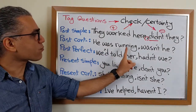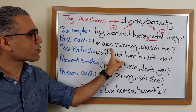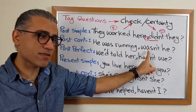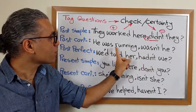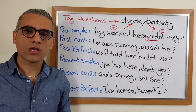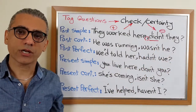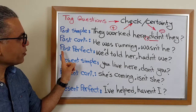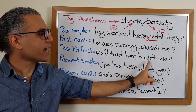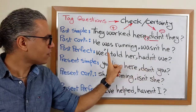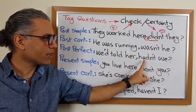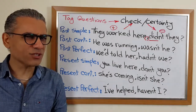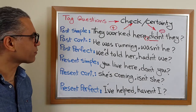Another example — past continuous: 'He was running, wasn't he?' The auxiliary verb is 'was,' the sentence is positive so the tag is negative, and the comma is always there. Past perfect: 'We told her, hadn't we?' — 'had,' positive becomes negative, comma. 'We told her, hadn't we?' means of course we had told her; or with question intonation, you're checking the information.